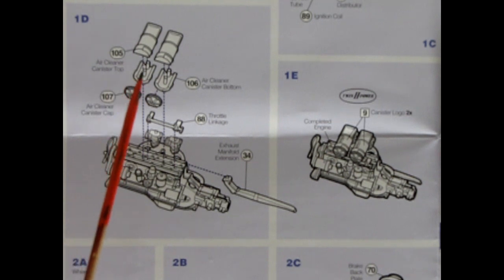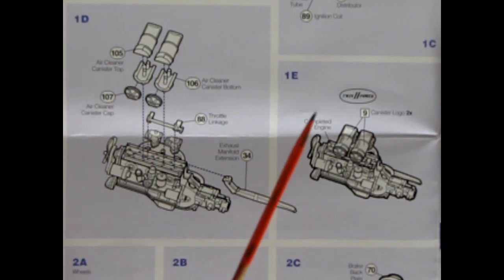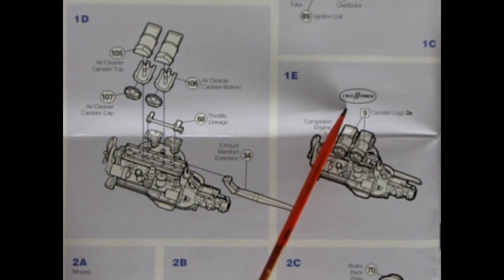Our next panel shows our three piece air cleaners going on. So you've got a top, a bottom and an end cap. And then we've got our throttle linkage as well as our exhaust manifold. This is followed up with the application of our twin H power decals which go on both of the air cleaner canisters.